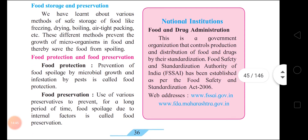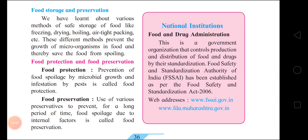Next, food storage and preservation. We have learnt about various methods of safe storage of food like freezing, drying, boiling, airtight packaging, etc. These different methods help in preventing the growth of microorganisms in food, and thus food spoilage is avoided. If you store and preserve your food properly, it will never get spoiled.